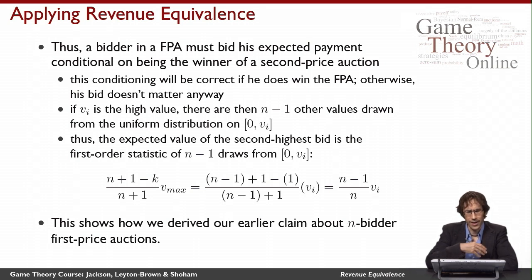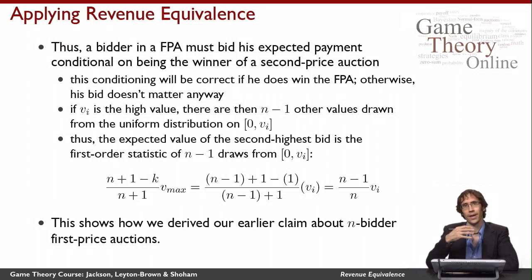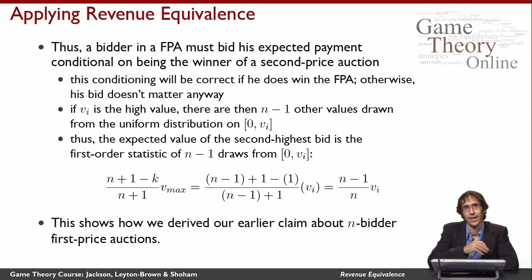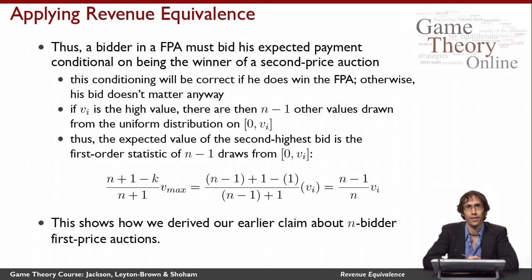I conclude that a bidder in a first price auction is going to have to pay on expectation the same amount as the same bidder would pay in a second price auction. Because only the winner has to pay anything in a first price auction, everyone should bid their expected payment conditional on being the winner of a second price auction. Each bidder should imagine they're the highest bidder and bid the expected second highest bid conditional on their value being the highest sample from the distribution. You might think this is strange because N minus one of them will be wrong when they do this conditioning — only one of them actually will be the highest bidder. The reason this makes sense is that the only bidder this matters to is the bidder with the highest valuation.